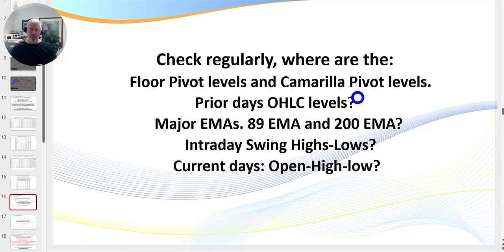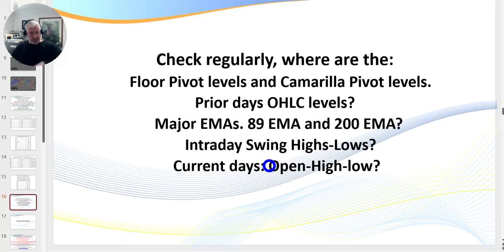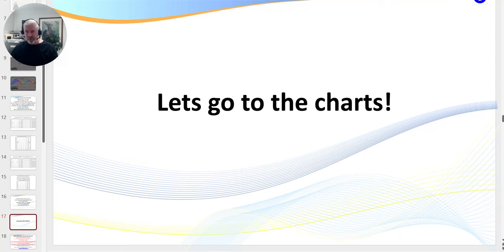Here are the key things I'm looking for on the charts: where my floor pivots and Camarilla pivots are — these are available as indicators on basically any charting platform, many for free. It's how you use and tweak the settings that matters. Also critical: the prior day's open, high, low, and close; your major EMAs; intraday swing highs and lows as targets; and the current day's high, open, and low.